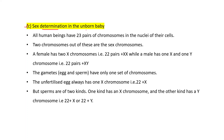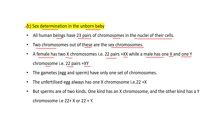Sex determination in the unborn baby: all human beings have 23 pairs of chromosomes in the nuclei of their cells. Two chromosomes out of these are the sex chromosomes — that is 22 pairs plus one pair of sex chromosomes. A female has two X chromosomes, that is 22 pairs plus XX. While a male has one X and one Y chromosome, that is 22 pairs plus XY. The gametes — egg and sperm — have only one set of 23 chromosomes.